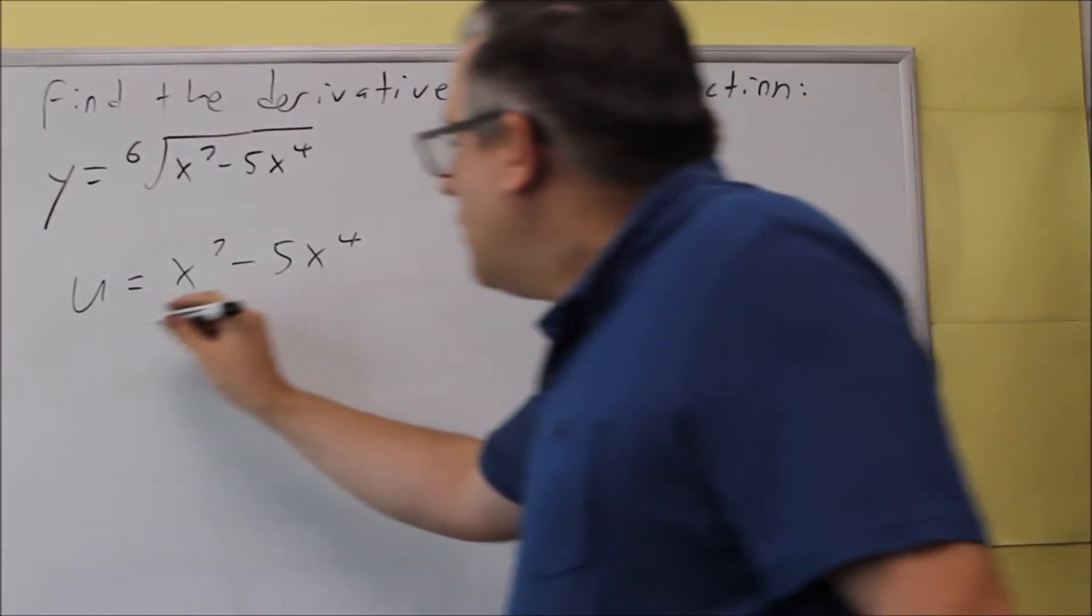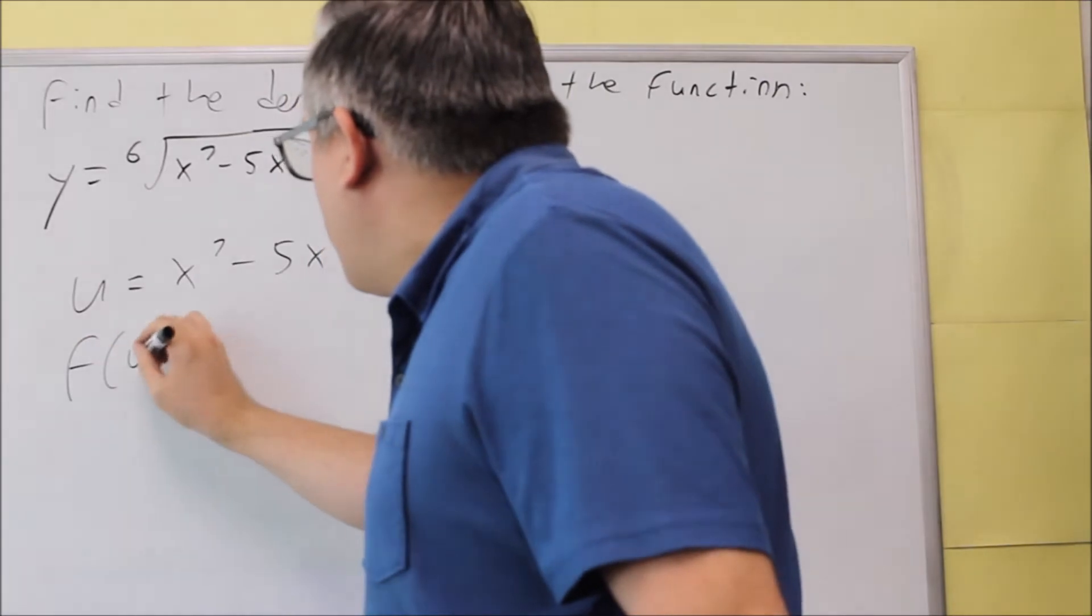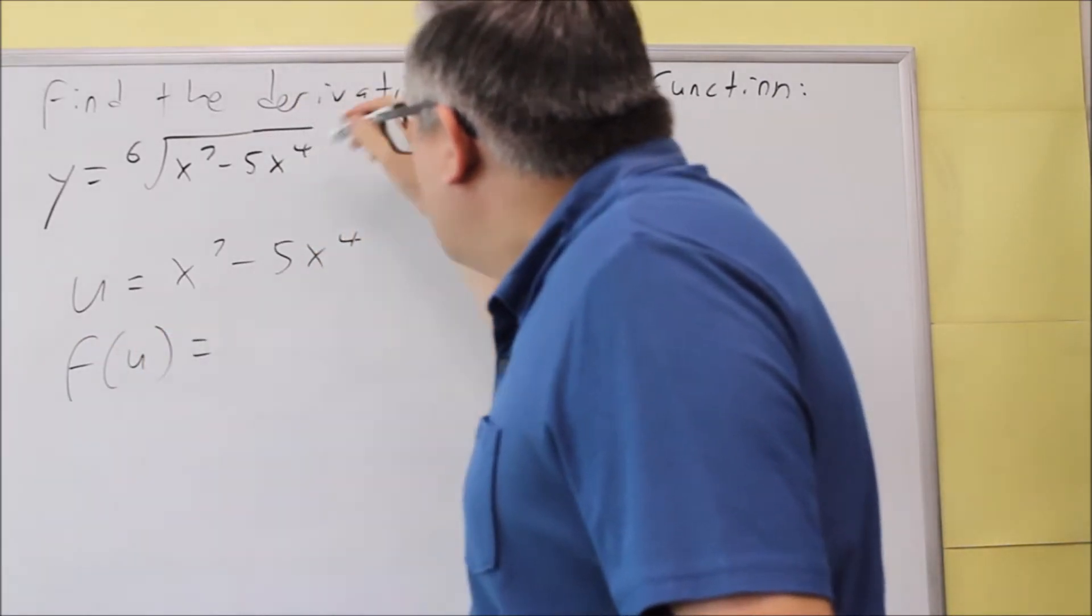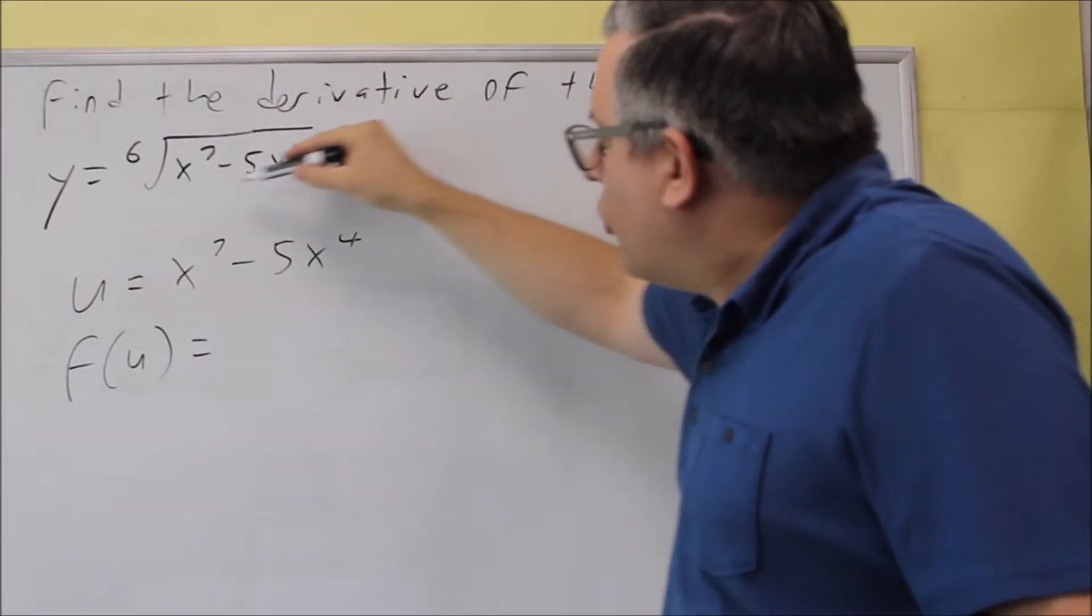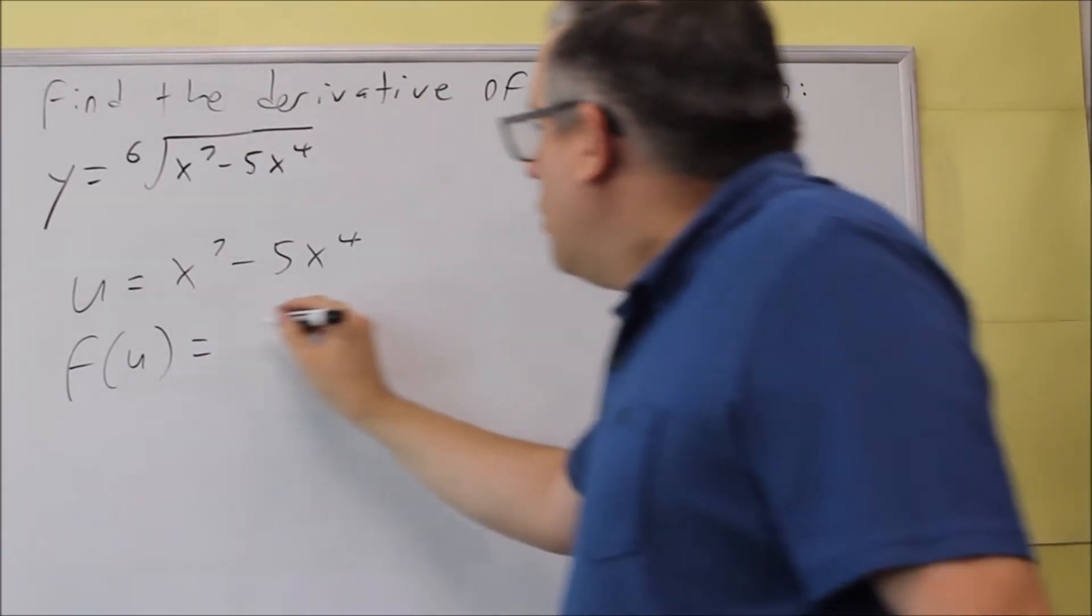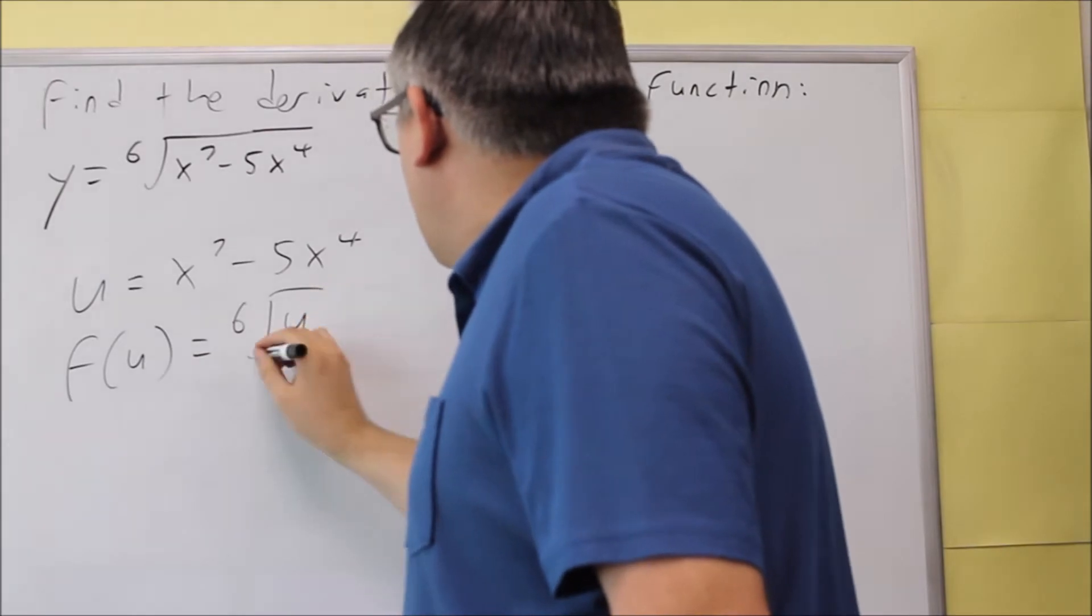Now let's find our f. Our formula for f is going to be the original function without the u in it. So if we replace all this with u, we get the sixth root of u.